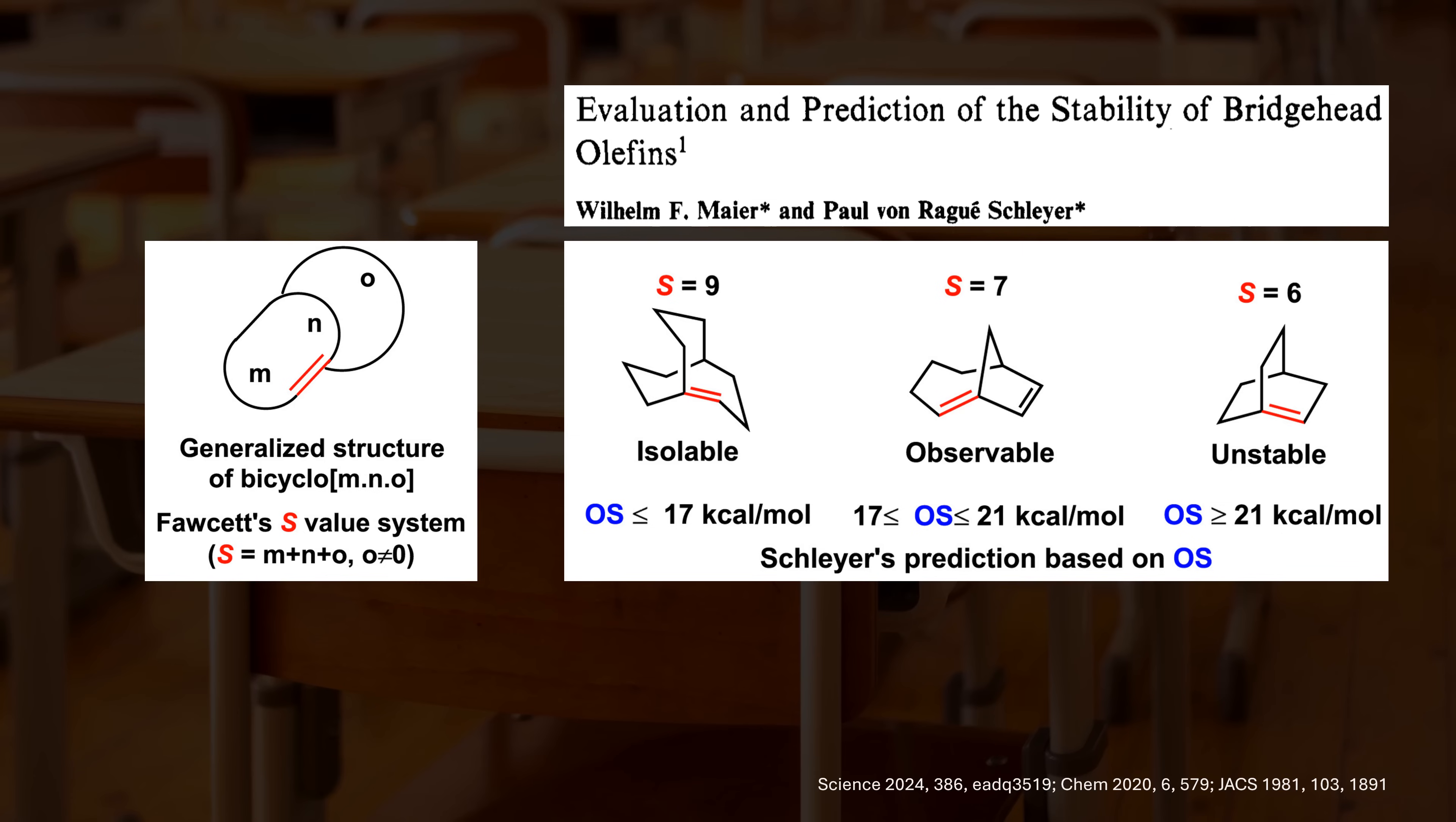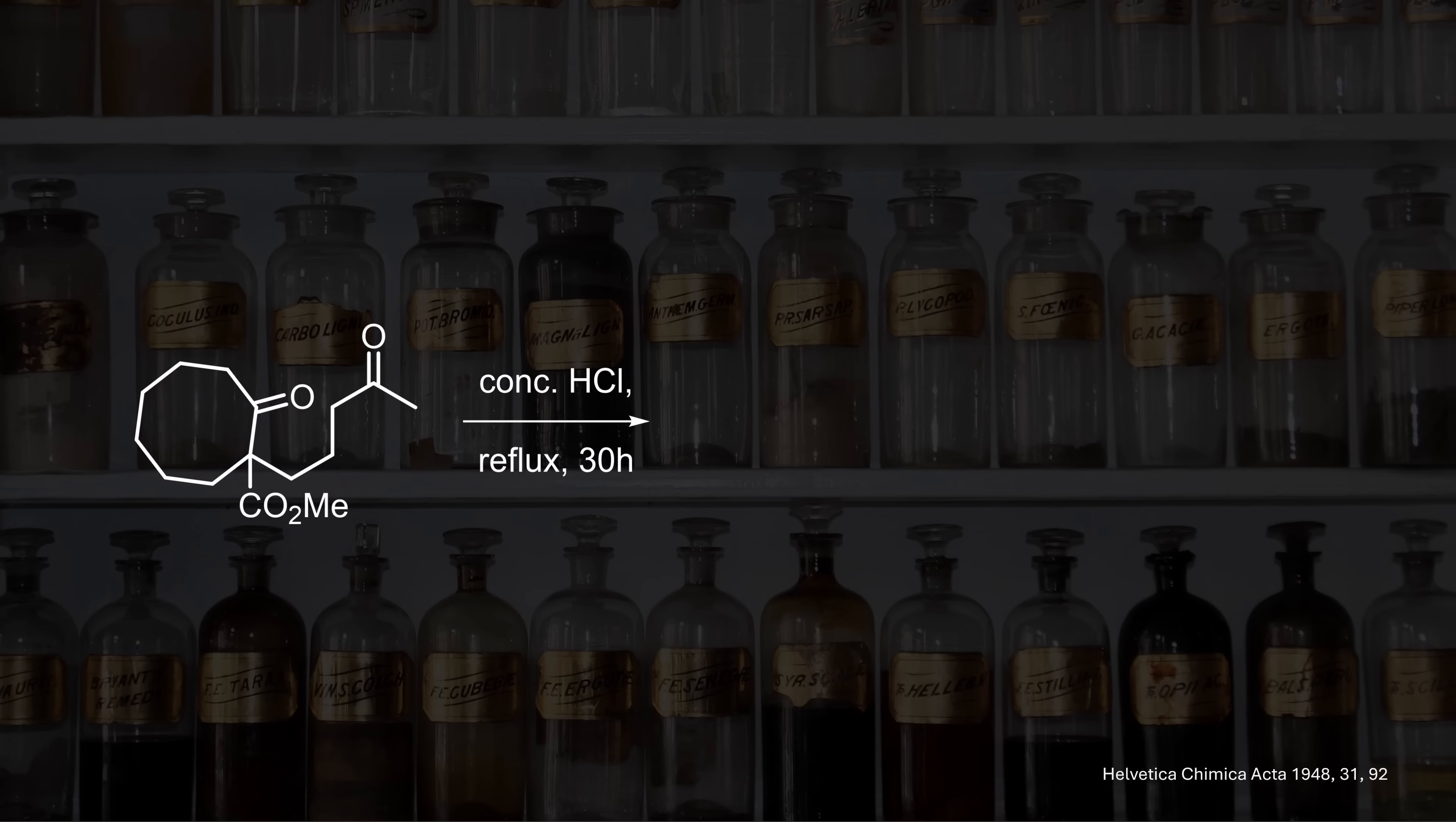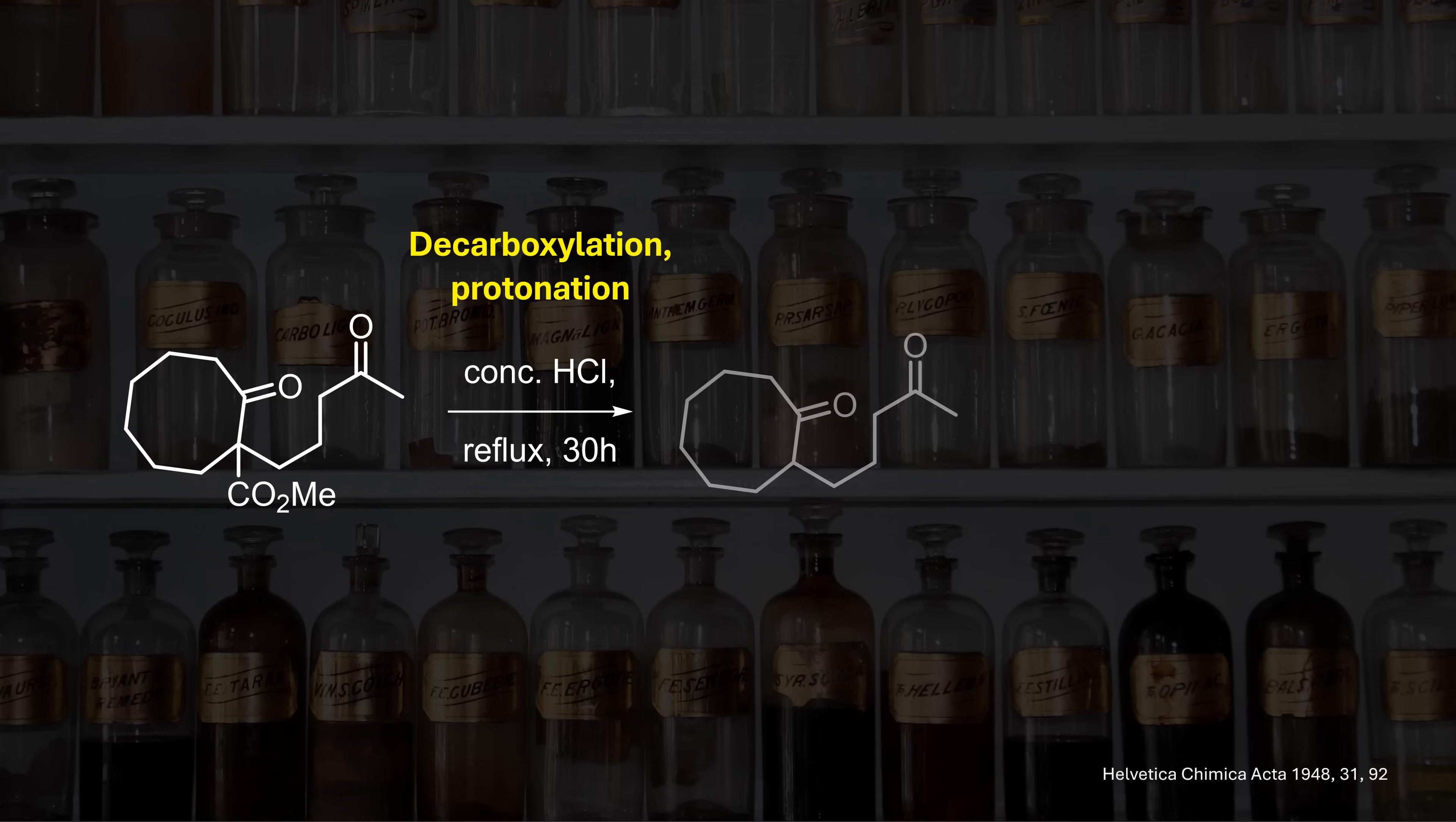The quest to synthesize such larger ring systems started in the mid-20th century as the legendary chemists Prelog and Ruschicka investigated the limits of Bredt's rule. When they exposed this compound to forcing acidic conditions, they found something quite surprising. The ester group is just a bystander so with acid and heat it hydrolyzes and decarboxylates. But what happens now? The remaining two ketones can engage in an aldol condensation.